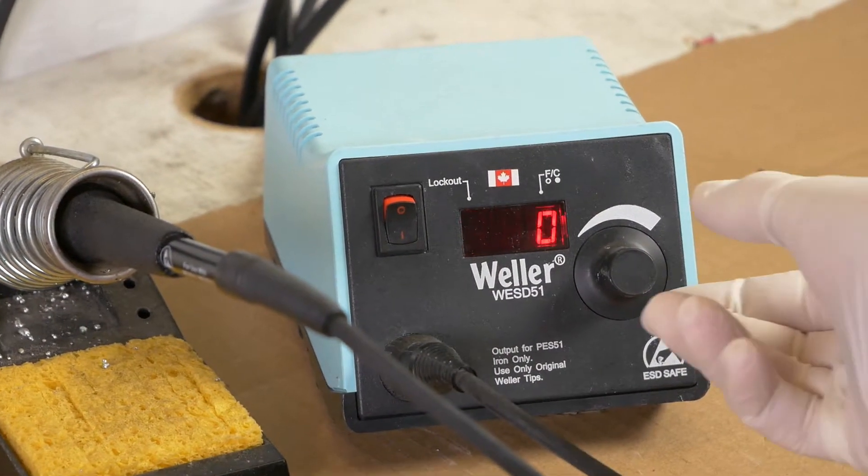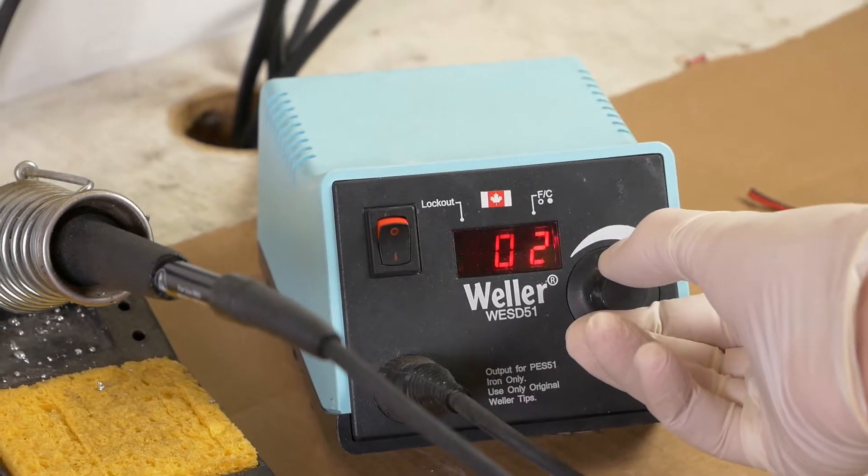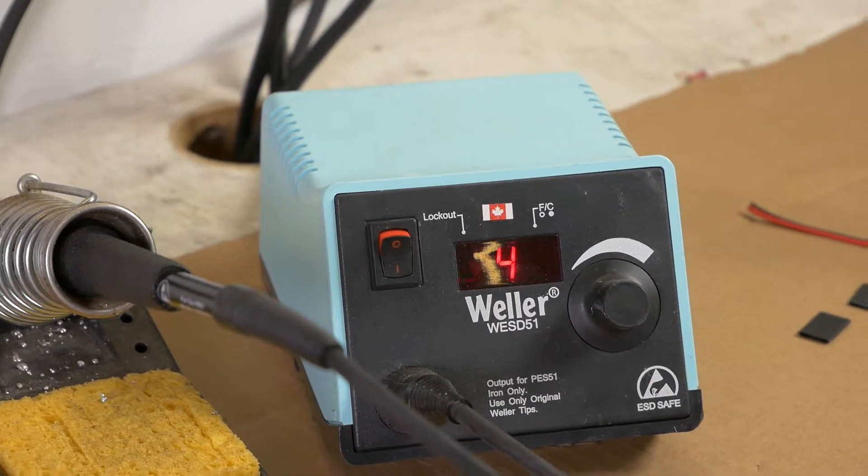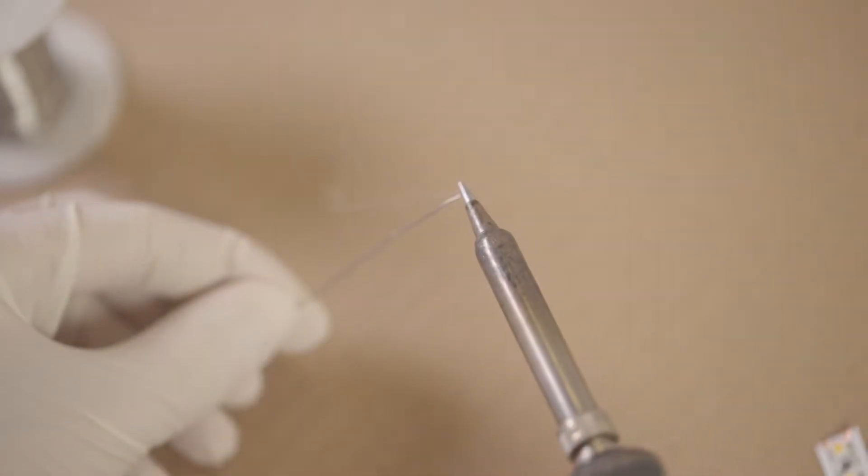With our Weller, we set it to 450 or 500 degrees Fahrenheit, about 250 degrees Celsius for lead-based solder. First, melt a tiny bit of solder onto the tip of the iron. Touch the iron to the contact. The bit of melted solder helps spread the heat.